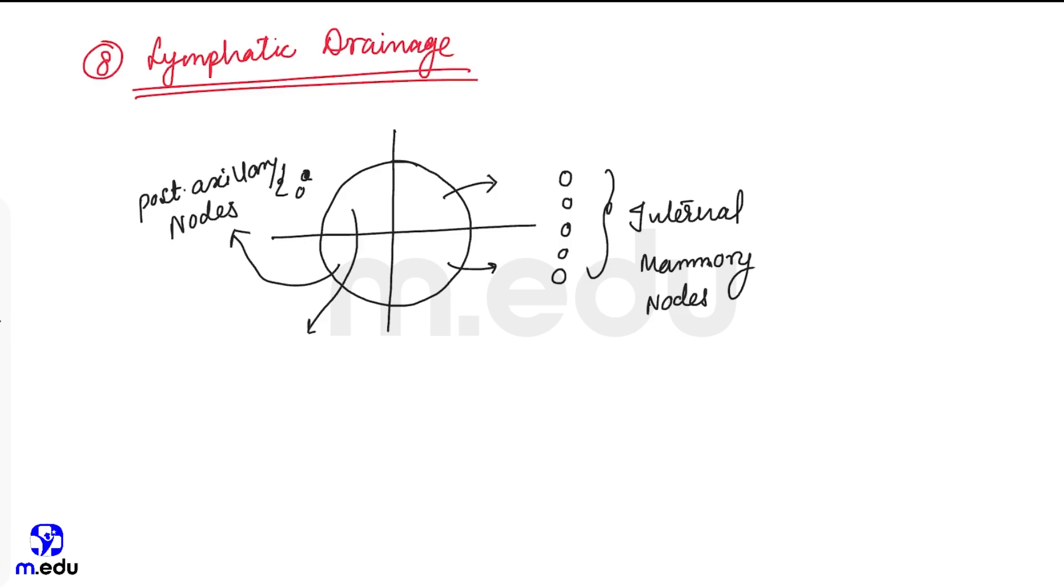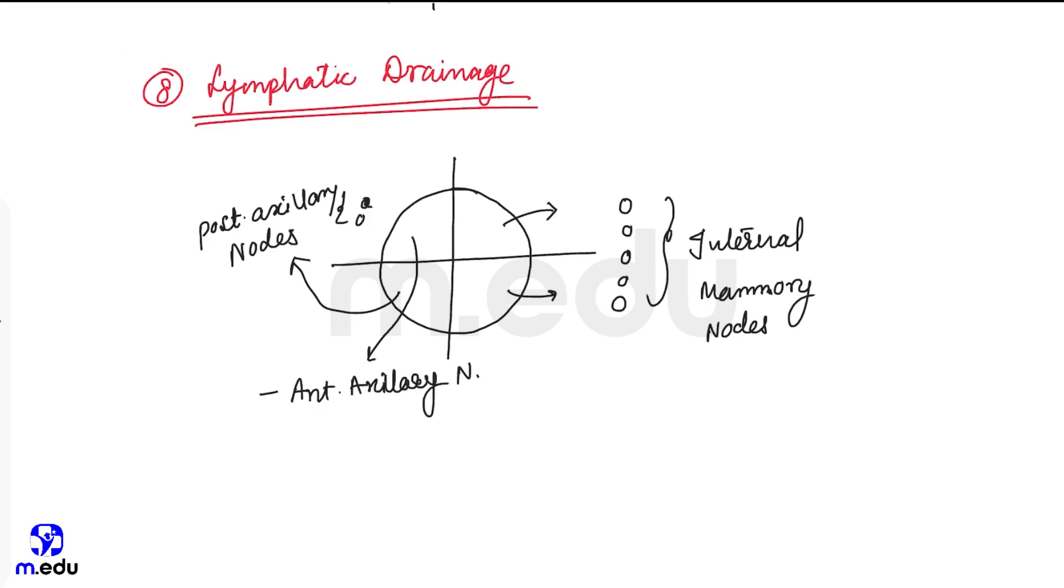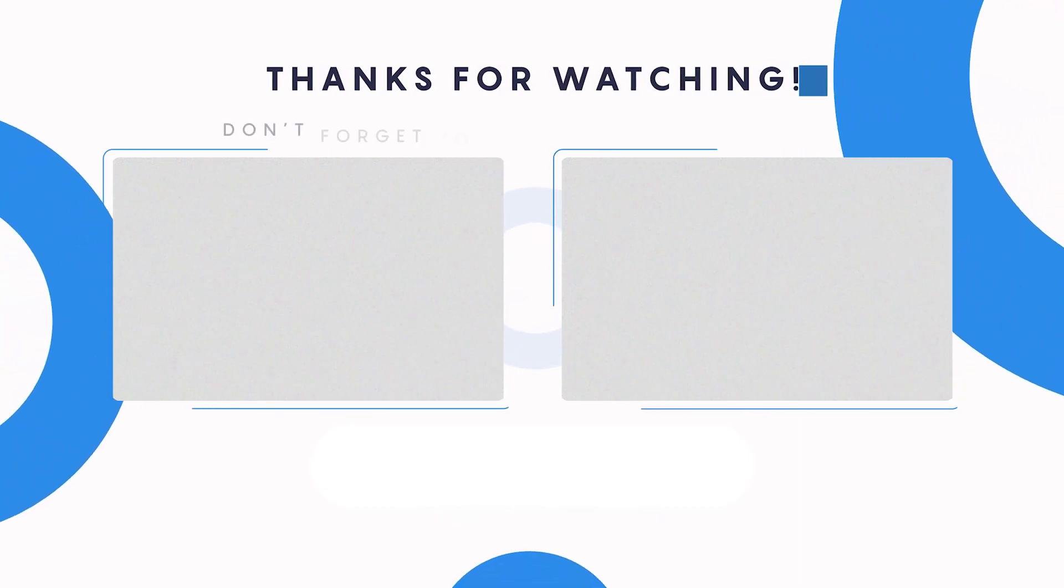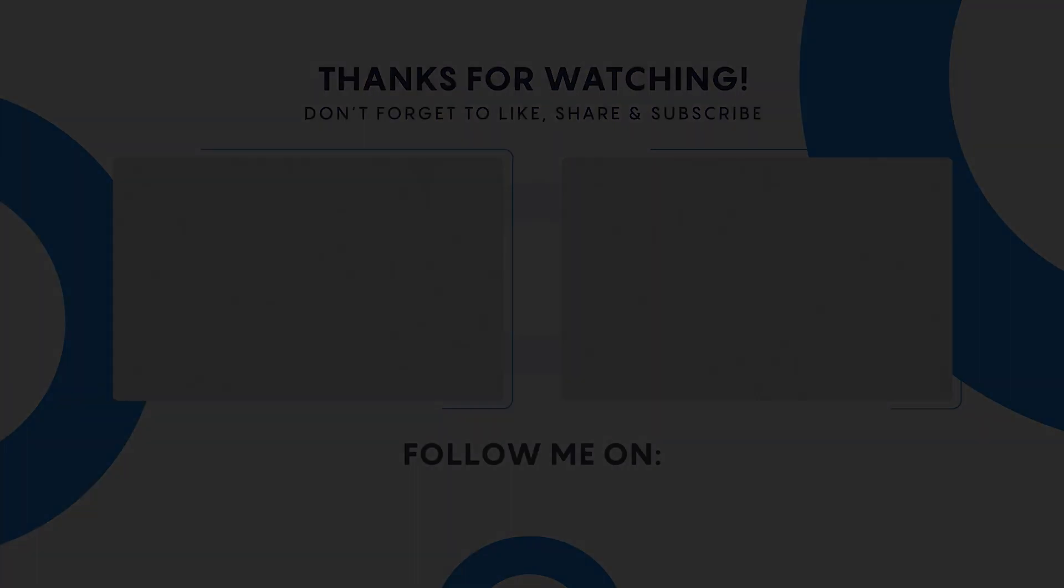And upper lateral quadrant drains into anterior axillary nodes, central axillary nodes, and apical nodes.